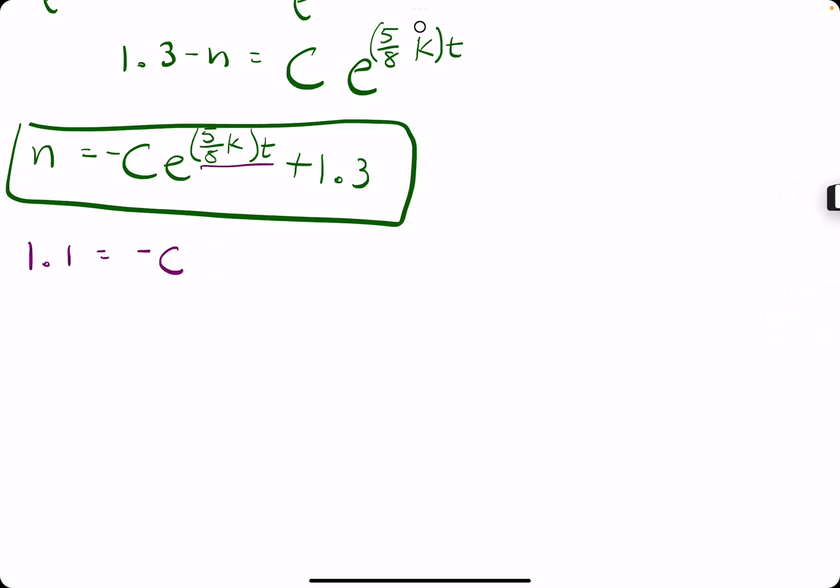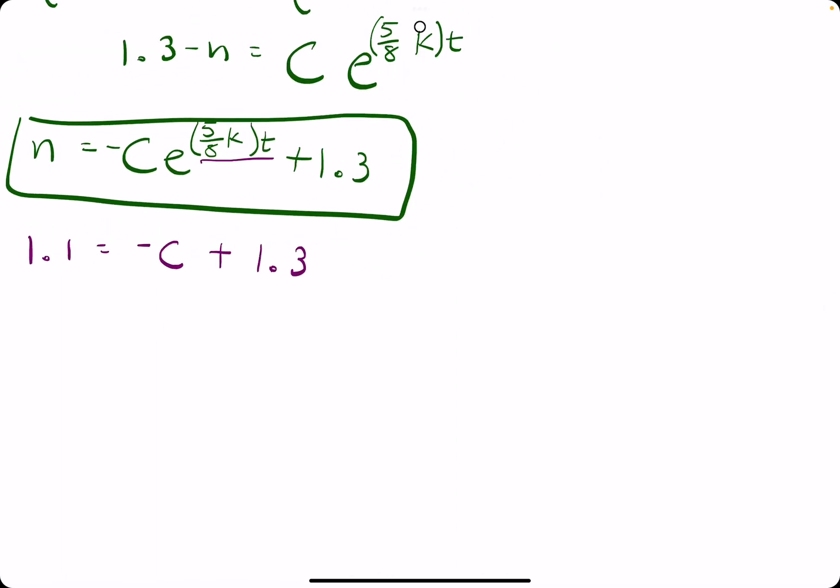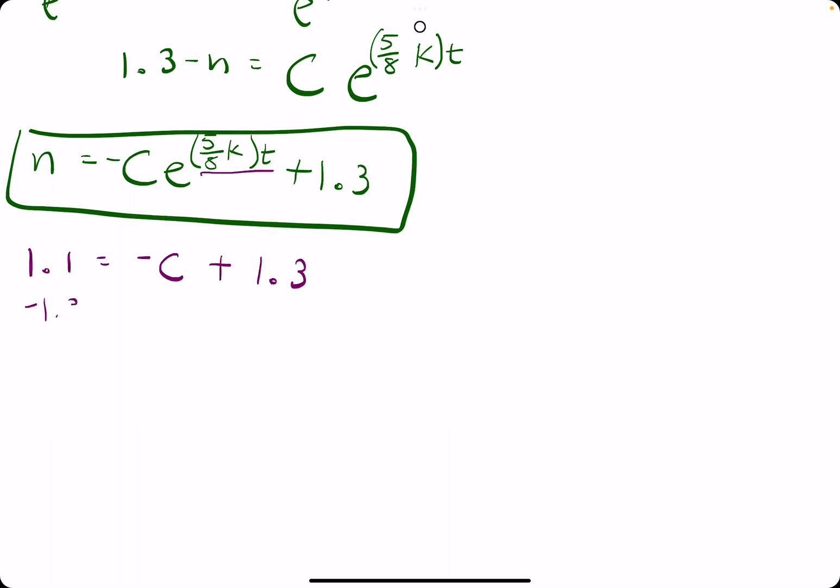So, the whole first term is just negative c plus 1.3 on the end. Now, if we subtract 1.3 on both sides, this will cancel, and we'll be left with negative 0.2 equals negative c. Therefore, positive 0.2 equals c.